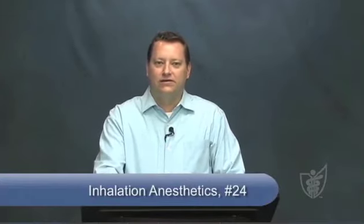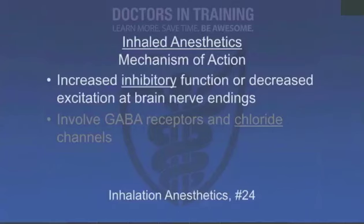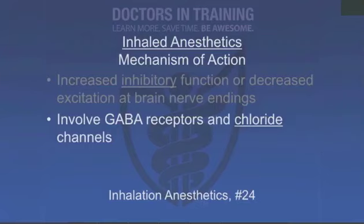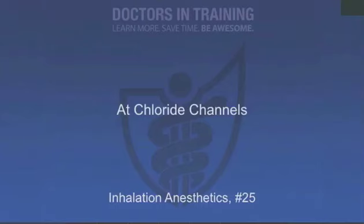The mechanism of inhaled anesthetics isn't fully understood — no single receptor has been found. They're chemically unrelated drugs that all end up with the same effect, which argues against a single receptor. In general, they either increase inhibitory function or decrease excitation at brain nerve endings. GABA and chloride channels are usually players. The halogenated hydrocarbons work at chloride receptors — so when in doubt, chloride is a great answer. GABA is not a bad one either.